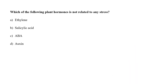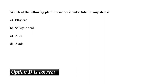Which one of the following plant hormones is not related to any stress? A. Ethylene, B. Salicylic acid, C. Abscisic acid, or D. Auxin? Ethylene is responsible for stress and senescence and fastens ripening. Salicylic acid is responsible for abiotic stress. Abscisic acid is responsible for abscission. Out of these four options, auxin is not a stress-related plant hormone. So the correct answer is option D.